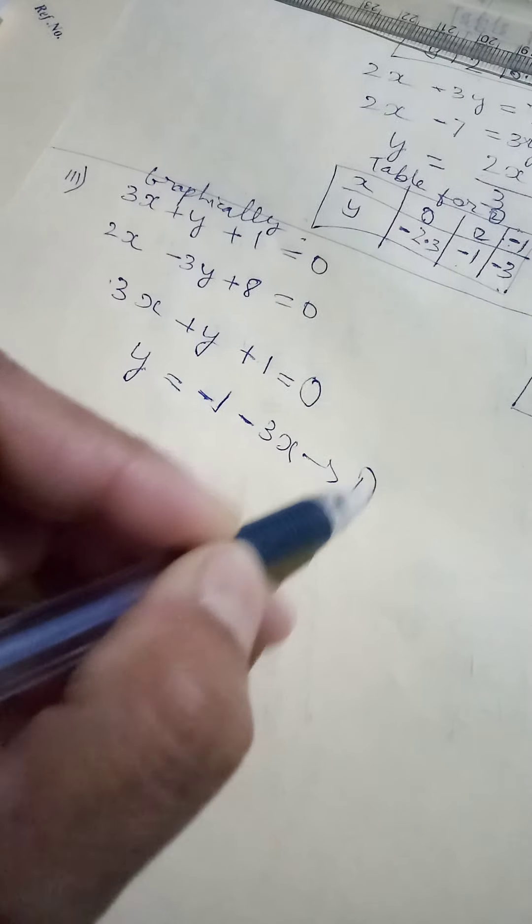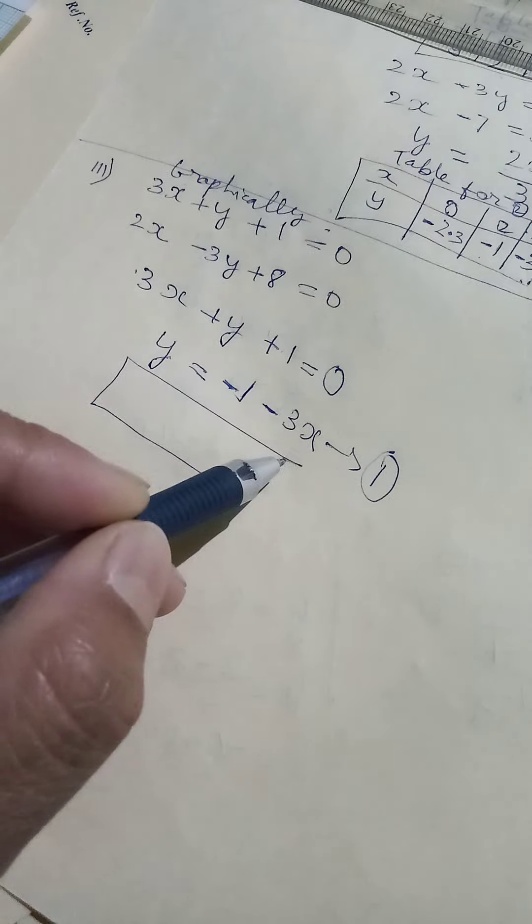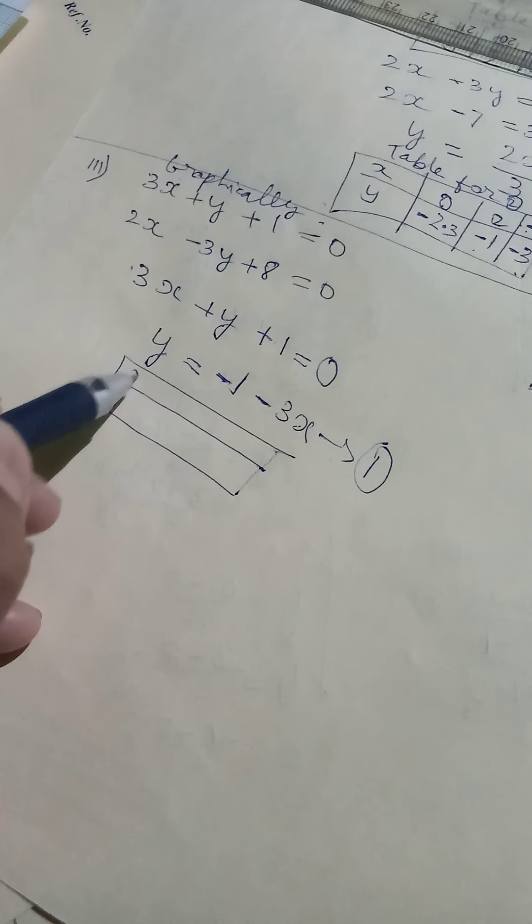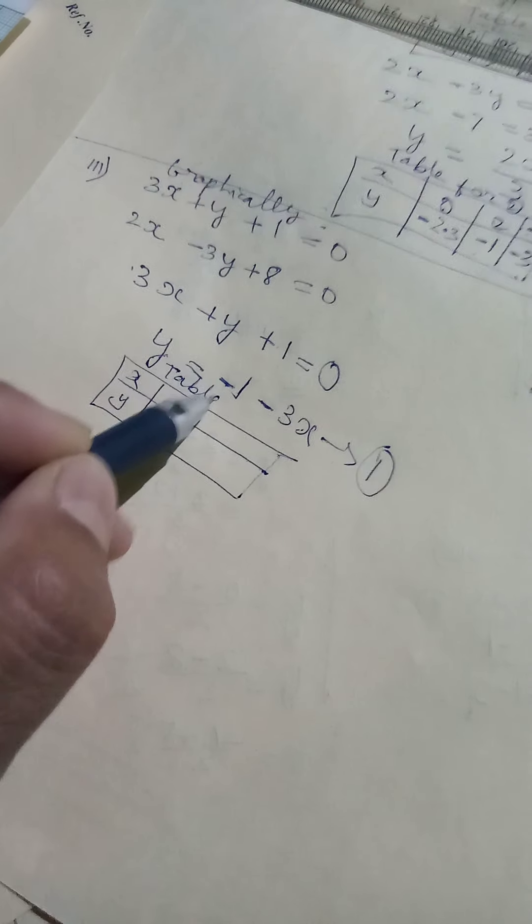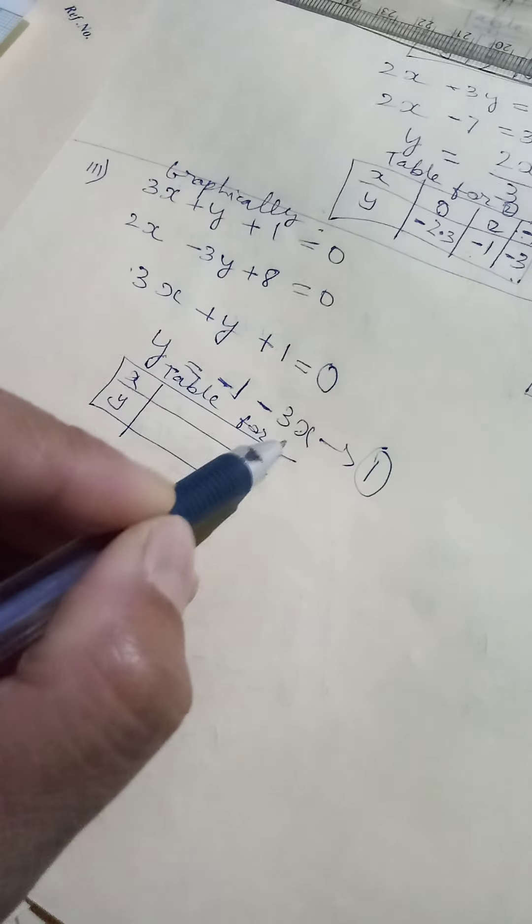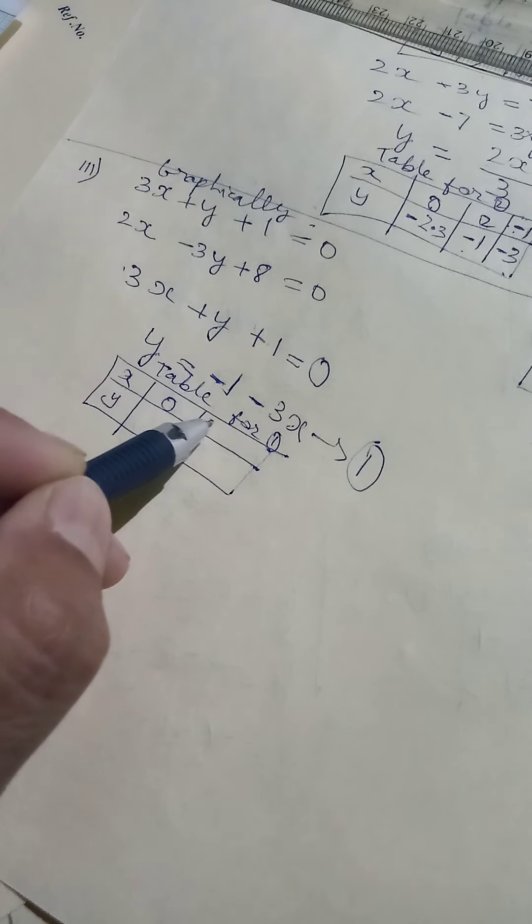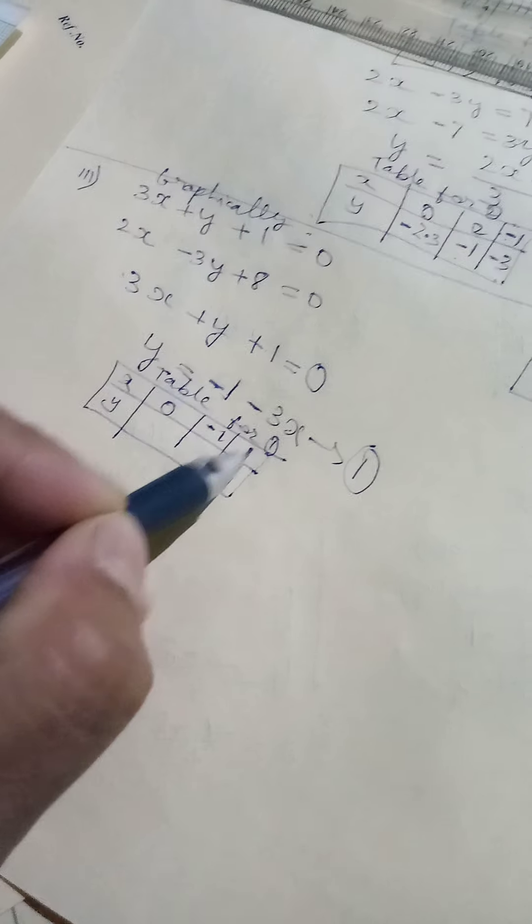So this we can see as equation 1. Since I bring X to the side, I can choose any three values for X, then I can calculate for Y. You can choose any three values, it depends on you.